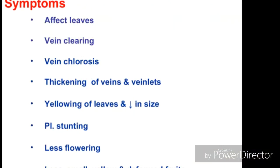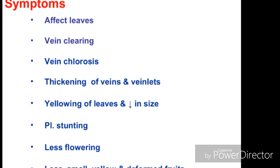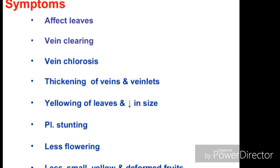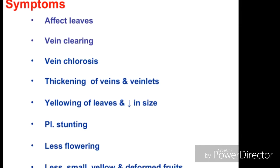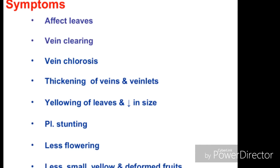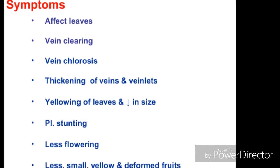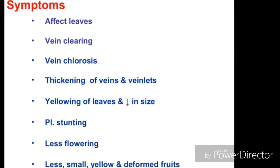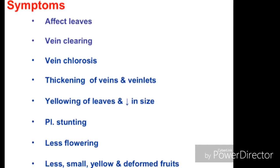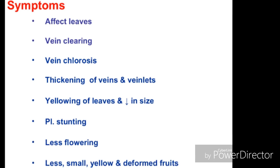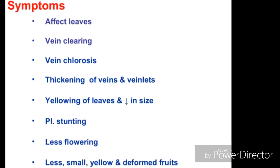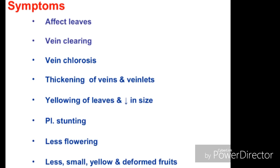Some symptoms may include: affection of leaves, vein clearing, vein chlorosis, and photo-oxidation of chlorophyll alongside the veins. The main function of veins is transportation of gases and liquid. Thickening of veins and vein subunits of veinlets also occurs. Leaves get yellowing and decreased in size. Plants get shorter in size. Less flowering will happen and less small, yellow, and deformed fruits will be produced.